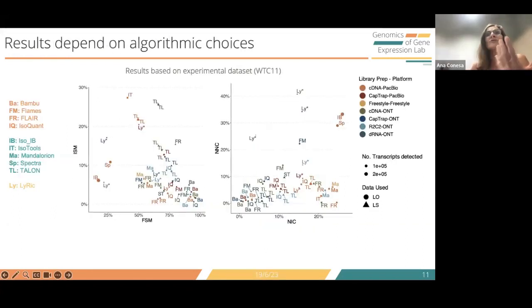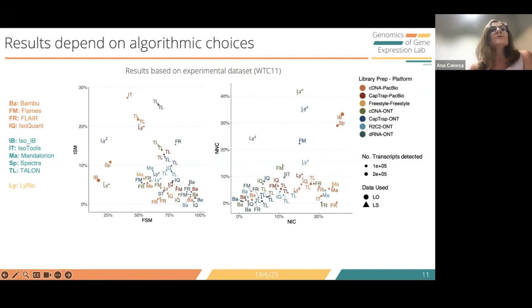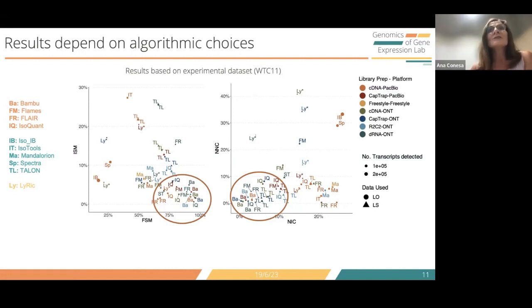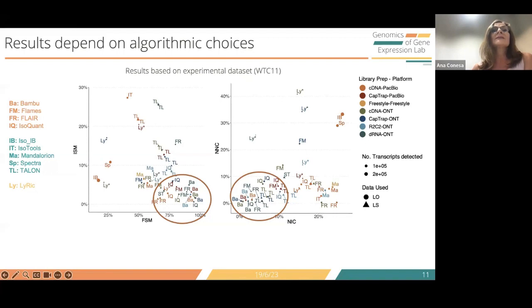Looking at the percentages of different SQANTI categories — full splice matches and incomplete splice matches — represented by tool letters and colored by library preparation and sequencing method, we can see that some tools like Bamboo and IsoQuant have a high number of full splice matches and very few incompletes, meaning they are identifying transcripts already in the reference. These same tools show little novelty, regardless of the library preparation used.